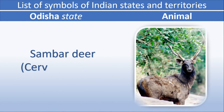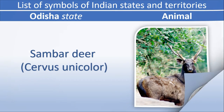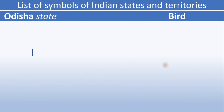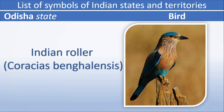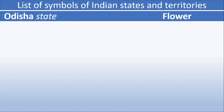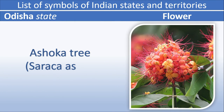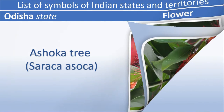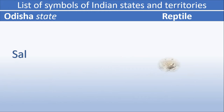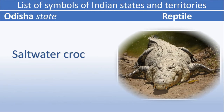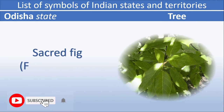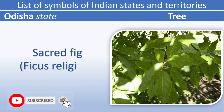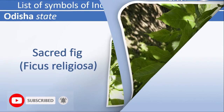Odisha animal: Sambar Deer. Odisha bird: Indian Roller. Odisha flower: Ashoka Tree. Odisha reptile: Saltwater Crocodile. Odisha tree: Sacred Fig.